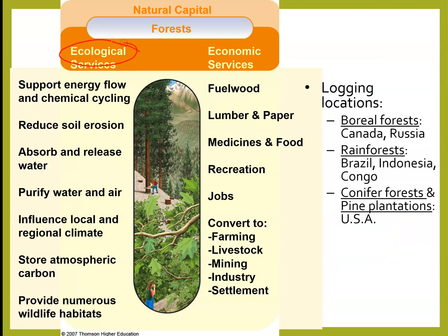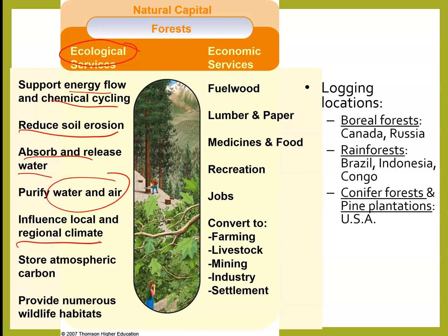Some ecological services that trees provide: they support energy flow and chemical cycling. The biogeochemical cycles rely on trees and forests to help move through their soil, roots, and leaves. Energy can also move through these forests because you have primary and secondary consumers all living in forests. Forests also reduce soil erosion, keep our soils healthy, absorb and release water — helping with the water cycle — and purify that water and air. They also influence climates near them with a cooling effect. Super importantly, they store atmospheric carbon. Trees take in carbon dioxide and release oxygen, storing that carbon so it doesn't go anywhere — and they've been doing it for millions of years. They also provide habitat for lots of wildlife.